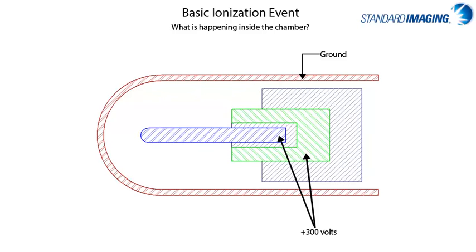In standard air-filled ionization chambers, positive ions and negative ions are collected, rather than positive ions and free electrons. The guard is essential in order to accurately define the collecting volume, which ultimately ensures that the signal collected is only due to ionization events within the collecting volume.